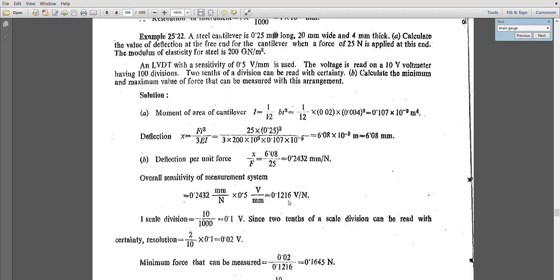For that, they have given very clearly this is a 10-volt voltmeter having 100 divisions, so each scale is 0.1 volt. They have clearly told that two-tenths of the division can be read with certainty. That is two-tenths into 0.1, which is 0.02 volts. Until this point, the voltmeter can give you a resolution.